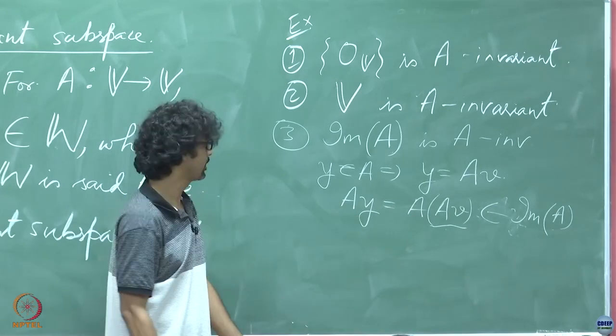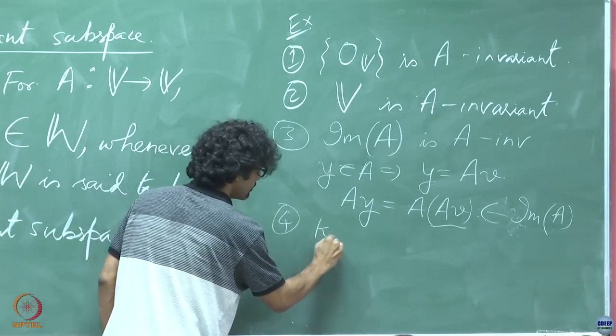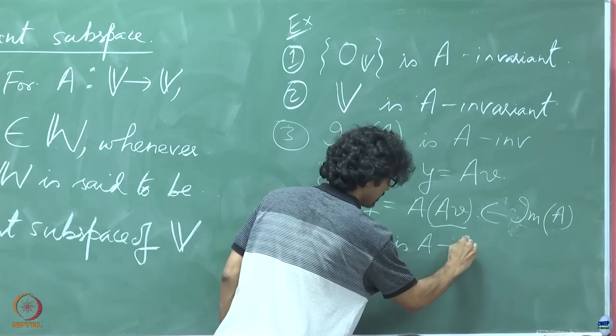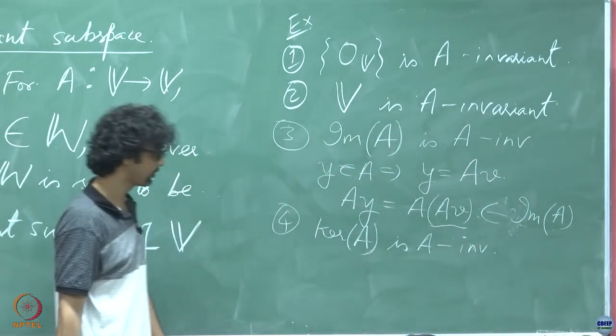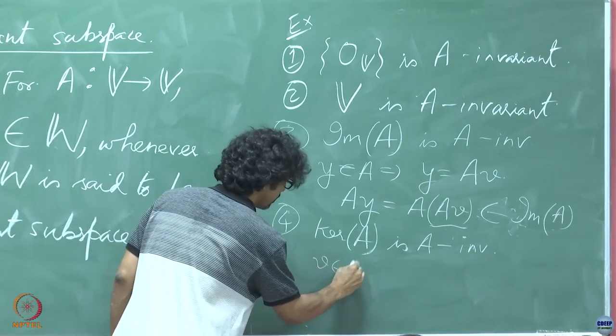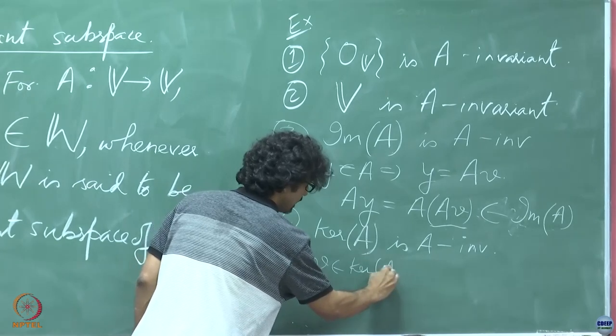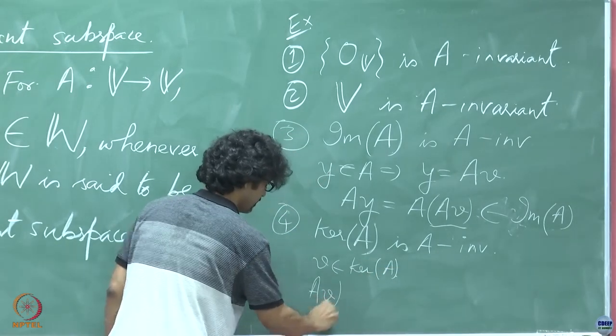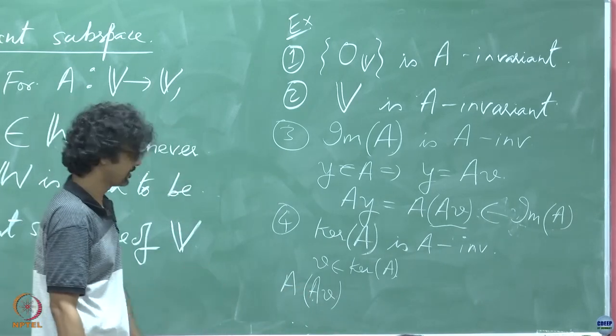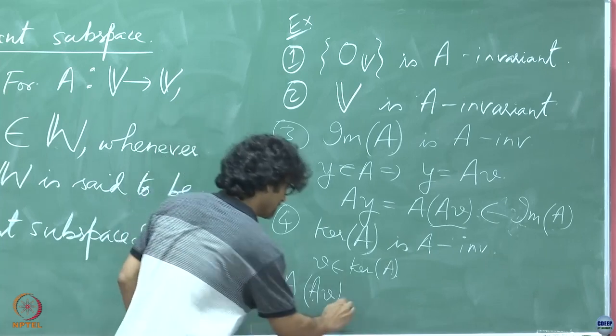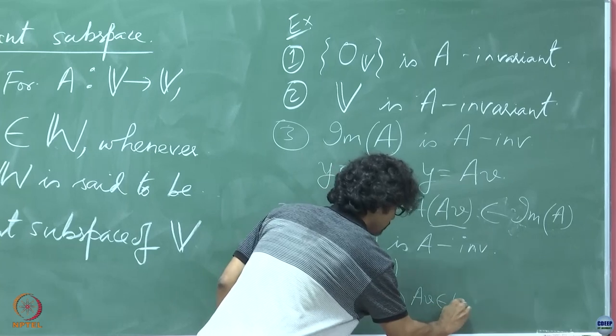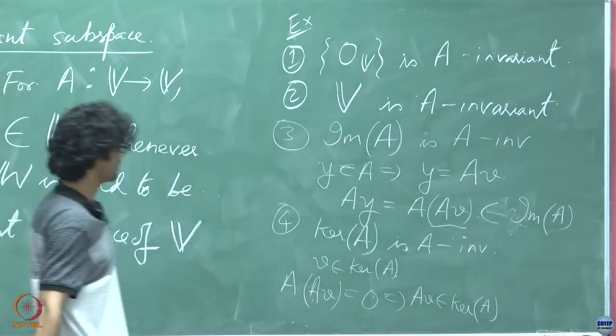belongs to the image of A because any Ay, any object of the form Ay, belongs to image of A, right? A little more interesting example: the kernel of A is A-invariant. Okay, how can you check that? So v belongs to kernel A, so what happens to Av? Let Av act on it. Obviously, I said slightly more interesting, I never said very interesting. Okay, implies Av belongs to kernel A.